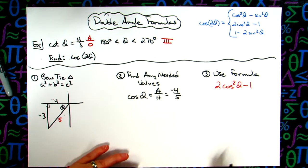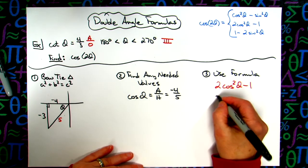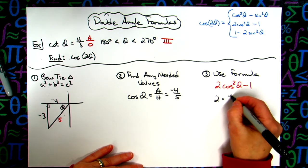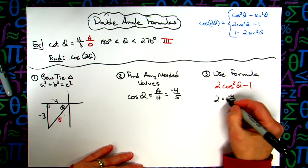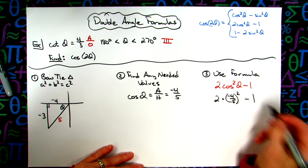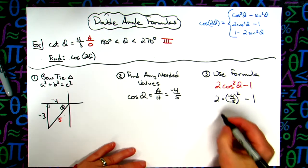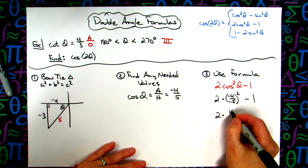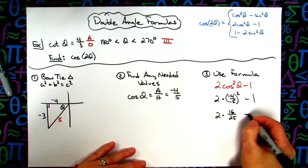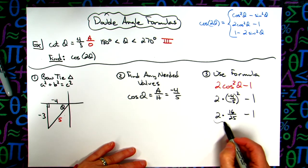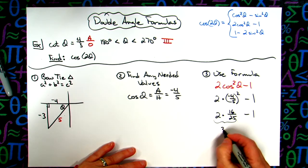Now once I've got the value I need, it's a matter of just plugging it in here. So I'm going to have two times a negative four-fifths. It is being squared and then minus one. So a little bit of arithmetic here. So two times sixteen over twenty-five minus one. Going ahead and multiplying this out, we'll have a thirty-two over a twenty-five.